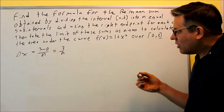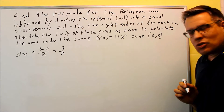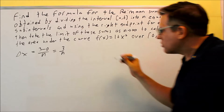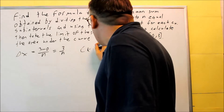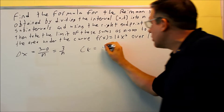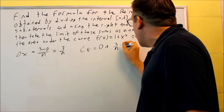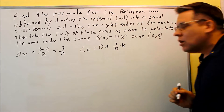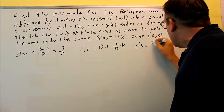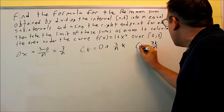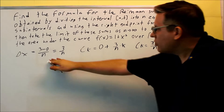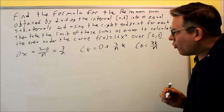Now that we have that, we need to find ck. We're using k here — in the previous video I used i, but you can use either one. The formula for ck is a plus delta x times k. So the a is zero, delta x is 3/n, multiplied by k, giving ck = 3k/n. For these kinds of problems, you always want to find delta x and ck first before putting them into the main formula.